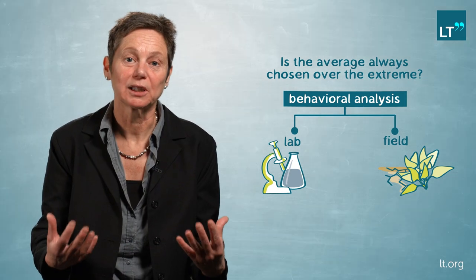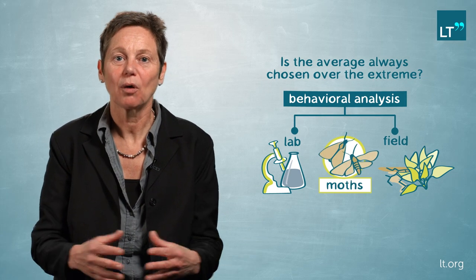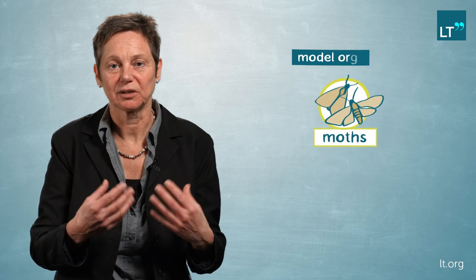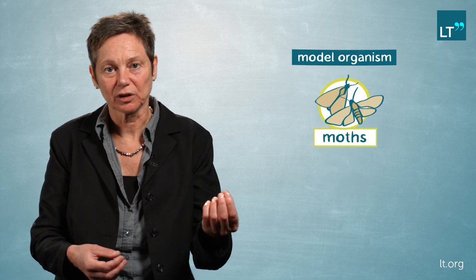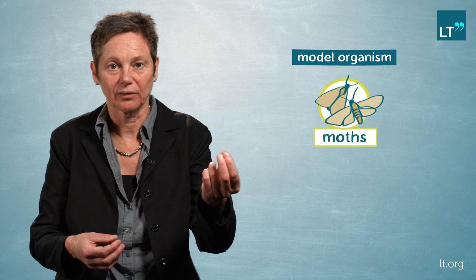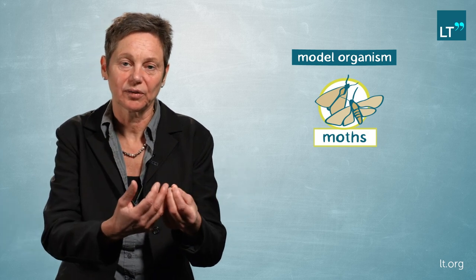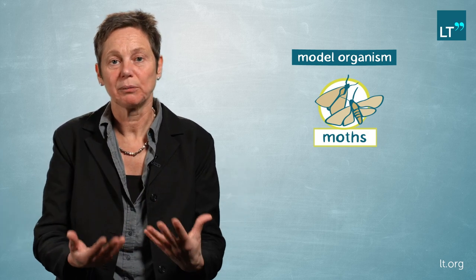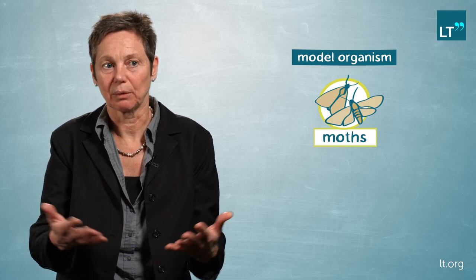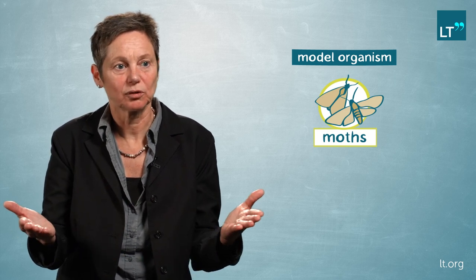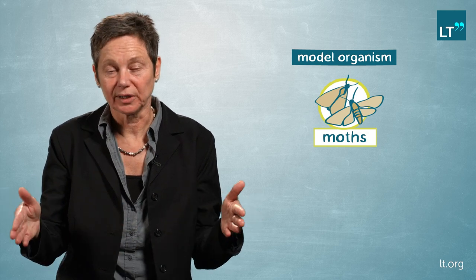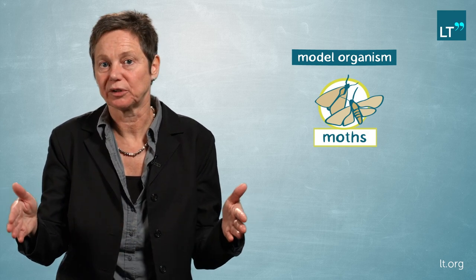Our model organism of choice are moths. In moths the sexual communication is very well defined — females produce a sex pheromone in a well-defined sex pheromone gland to which males are attracted. Females produce between 200 and 1,000 offspring over a generation time of just a month.